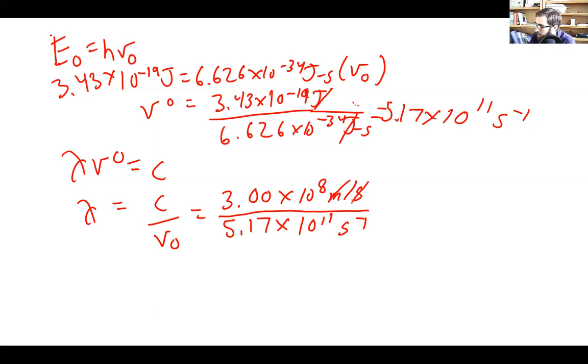What's going to cancel is seconds inverse, so we're going to be left with meters. And so that comes out to 3 times 10 to the eighth divided by 5.17 times 10 to the 14. That comes out to 5.80 times 10 to the minus 7 meters.